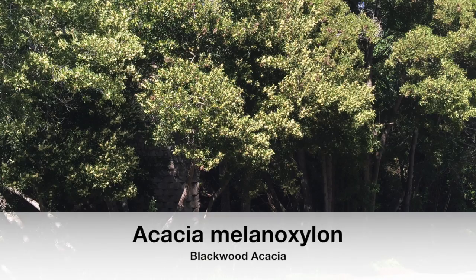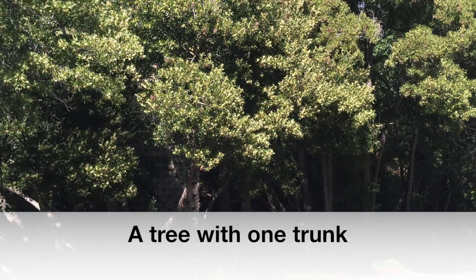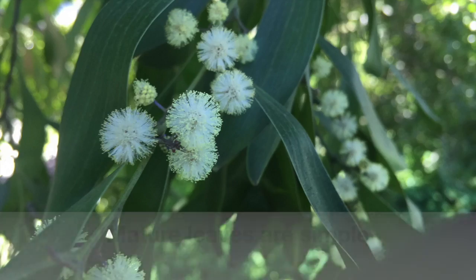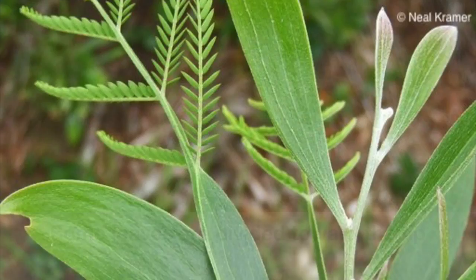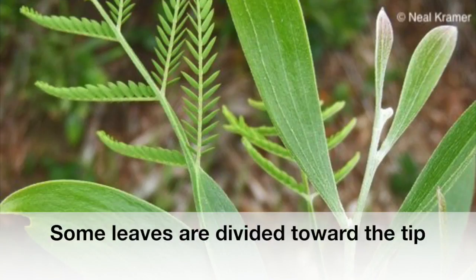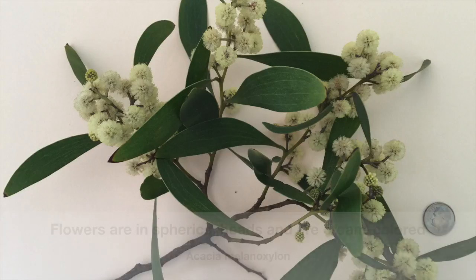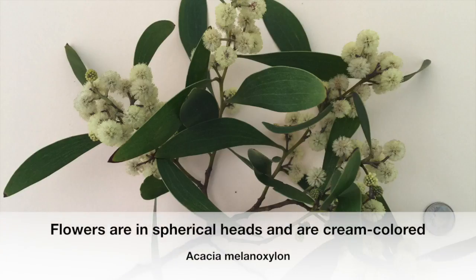The blackwood acacia, Acacia melanoxylon, is a fast-growing tree, generally with one trunk. The mature leaves are simple, but look closely and you will occasionally find some leaves that are divided or compound. The flowers of the blackwood acacia are in spherical heads and are cream-colored, another character that helps identify this species.